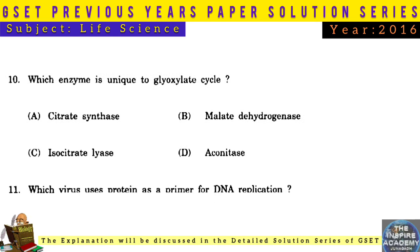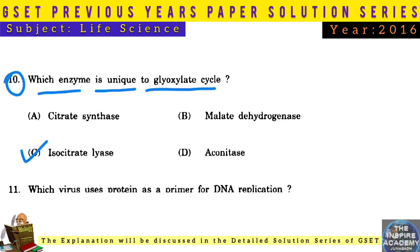Question No. 10: Which enzyme is unique to the glyoxylate cycle? Answer: Isocitrate lyase.